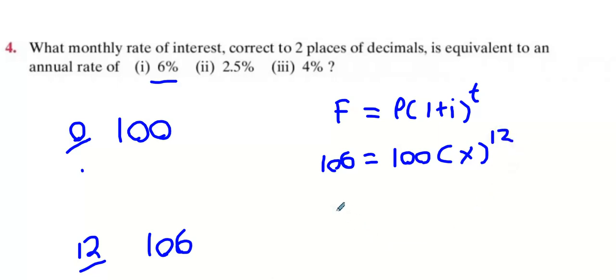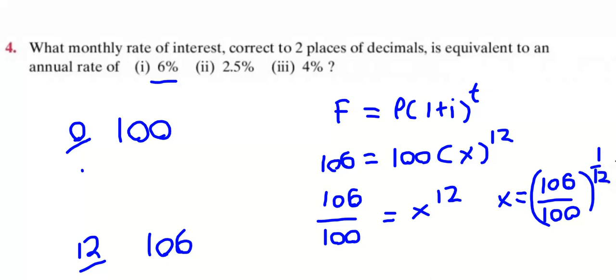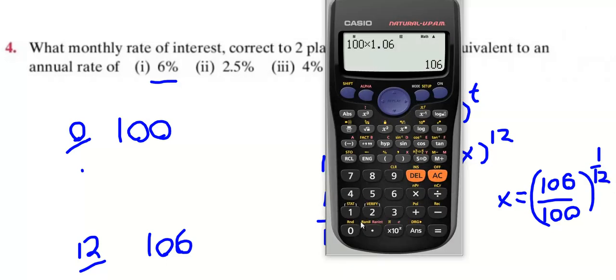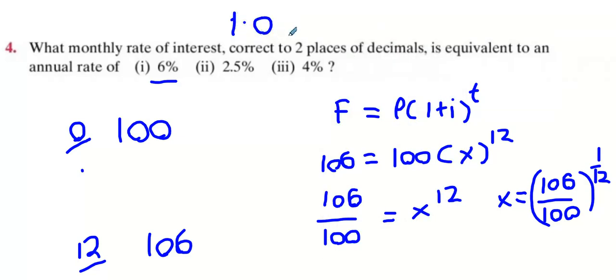So 106 divided by 100 is x to the power of 12, and then 12th root or to the power of a 12th. We're going to do 106 over 100 to the power of 1 over 12. Press the fraction button, brackets, 106 divided by 100 to the power of the 12th, take 1 over 12.